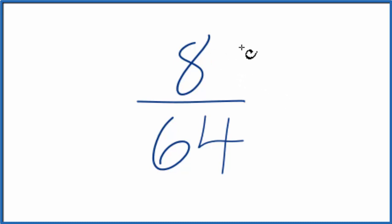I know that 8 goes into 8 once, and it goes into 64 eight times. 8 times 8 is 64. So I can divide the numerator by 8.